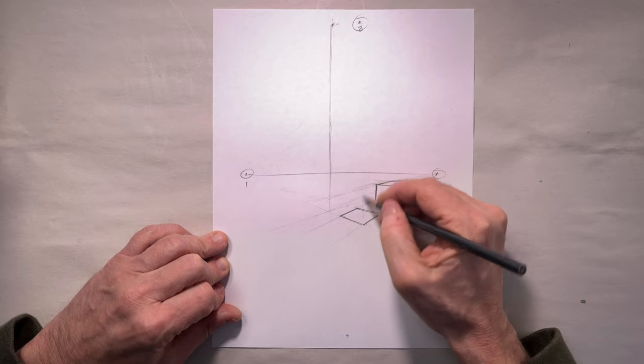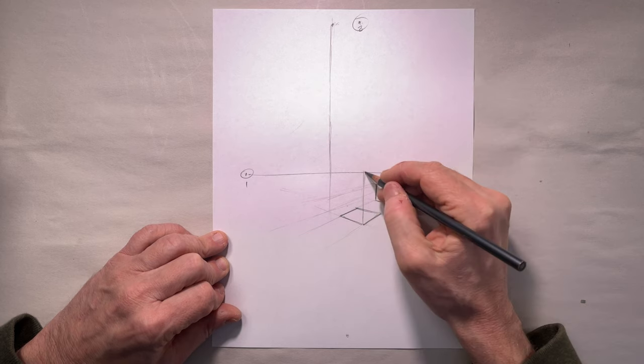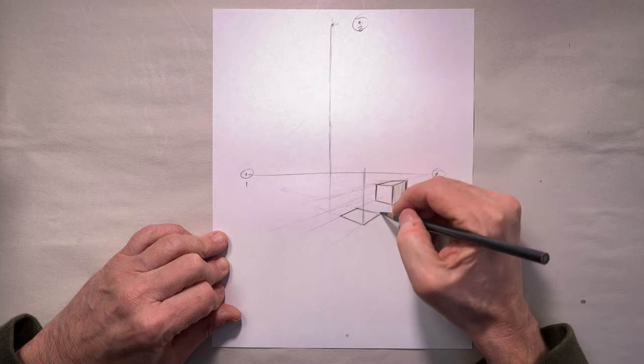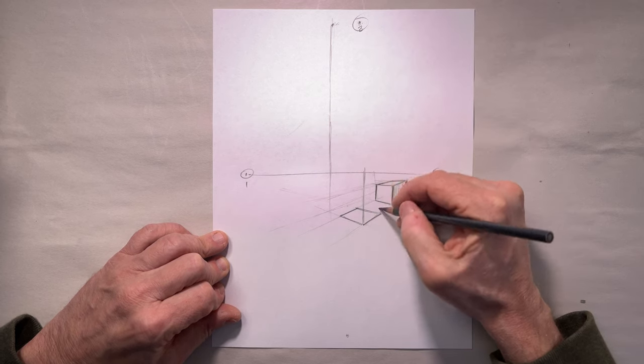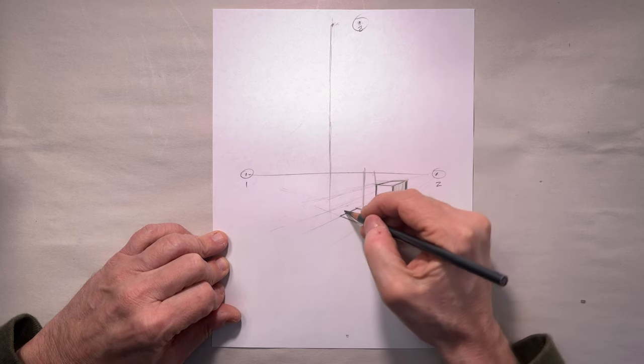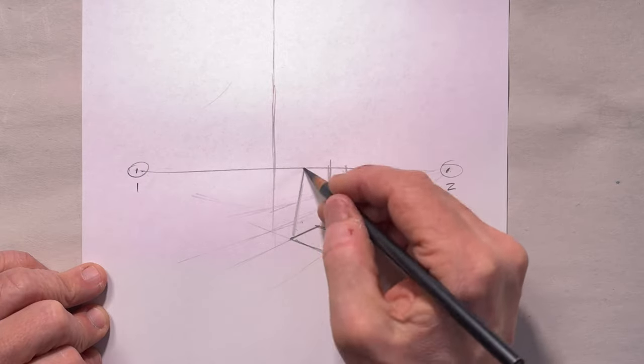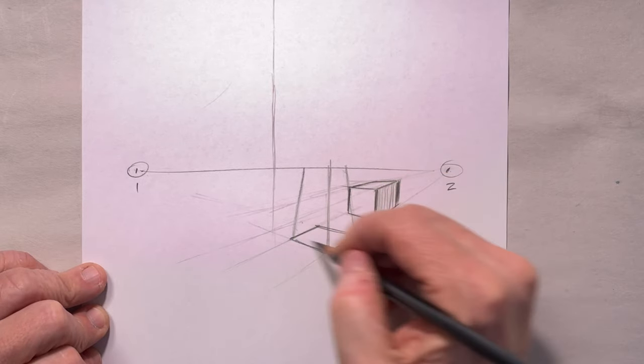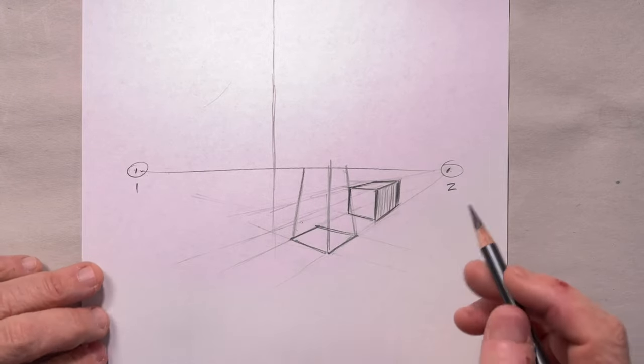So I'm going to pull this up and imagine that this corner is directly below the vanishing point. And then over here, this one points to the right inward right there. So none of these lines are parallel. They all have an angle to them.